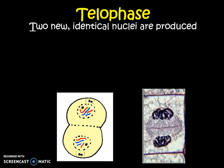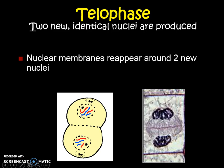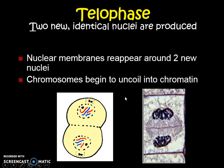In telophase — T for two — we start pinching off into two new cells. The chromosomes are now at the edges of the cell, we no longer need our spindle fibers, and the nuclear membrane starts to reform because we want to put the nucleus back around the two different parts. But we don't quite pinch the cell in half yet — that's a separate step. We now have two identical nuclei forming. The coiled chromosomes are starting to unravel and become thinner, going back toward the chromatin form.